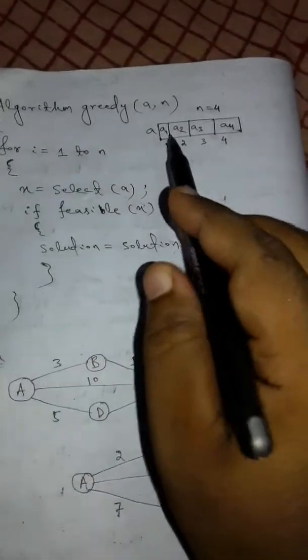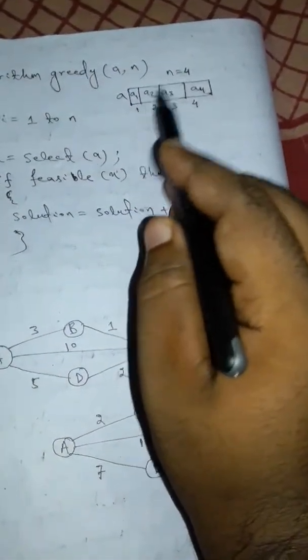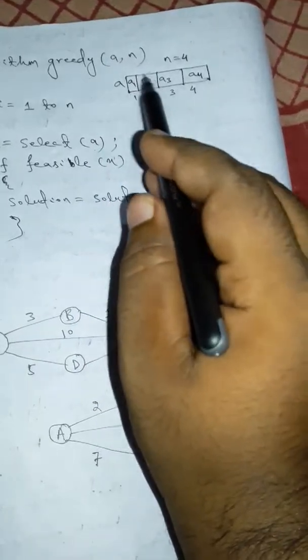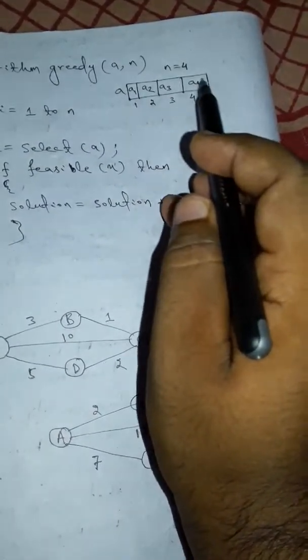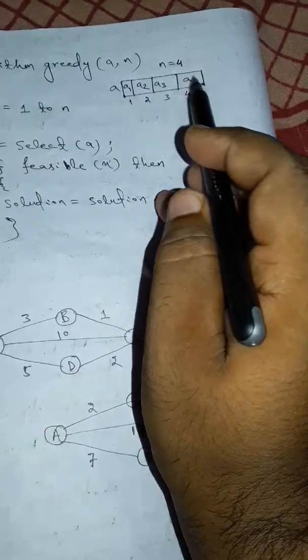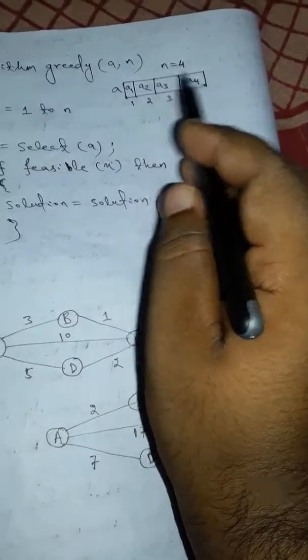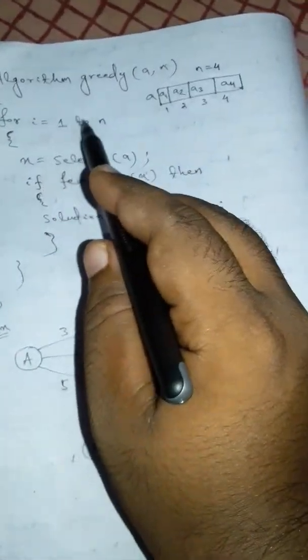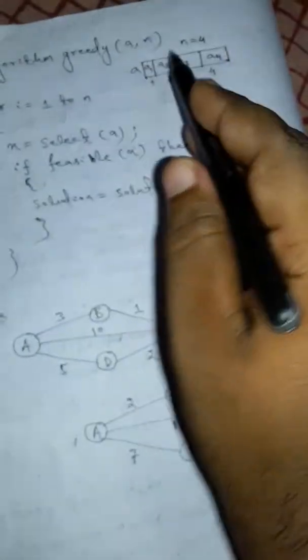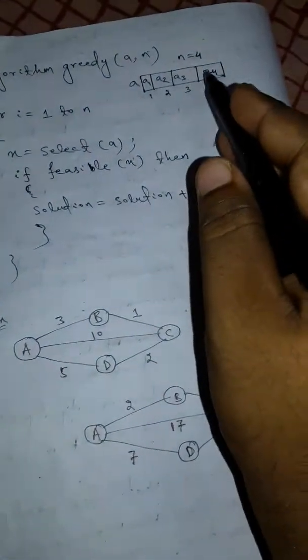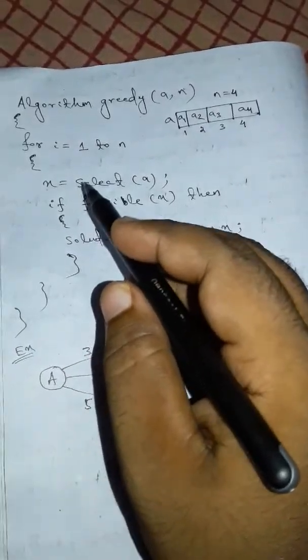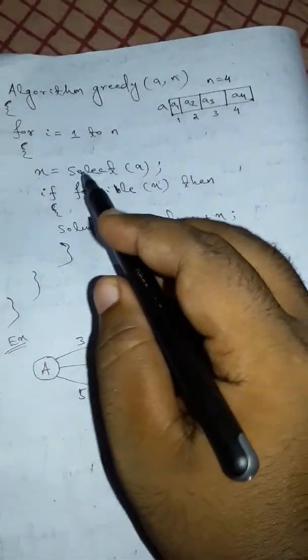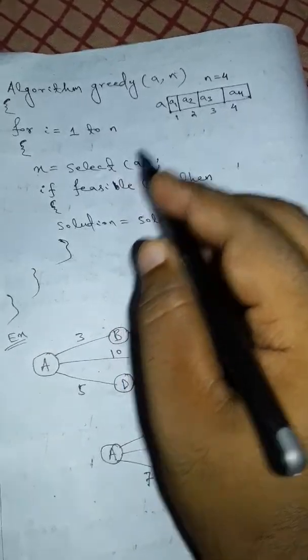First of all, look at this algorithm. I have taken this algorithm: greedy(A, n) where n is the size and A is the data. Then the algorithm starts: for i equals 1 to n, taking n number of data.